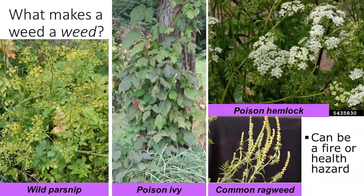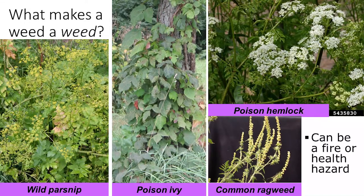Many know ragweed and poison ivy already, but may be less familiar with the other two species shown here, which are found across the state, often growing together. Poison hemlock is highly toxic if ingested. Wild parsnip contains a sap that can cause painful blistering once your skin is exposed to sunlight, so cover your skin if you must physically handle this plant.